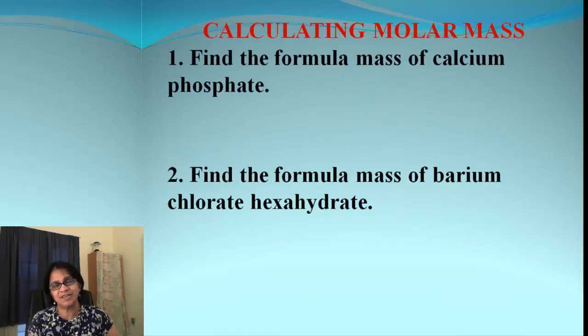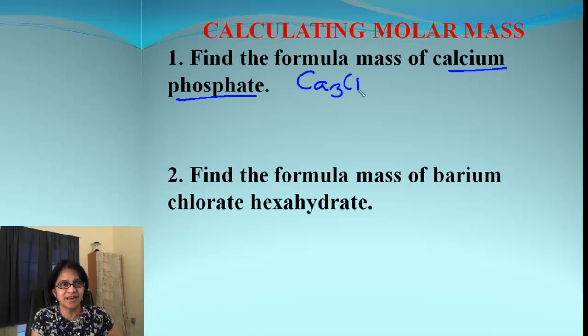Here is the first example asking for formula mass, which means molar mass for calcium phosphate. Let's get the formula for calcium phosphate first, which I know you all know how to get. The formula is Ca3 and we need 2 phosphate, so (PO4)2.